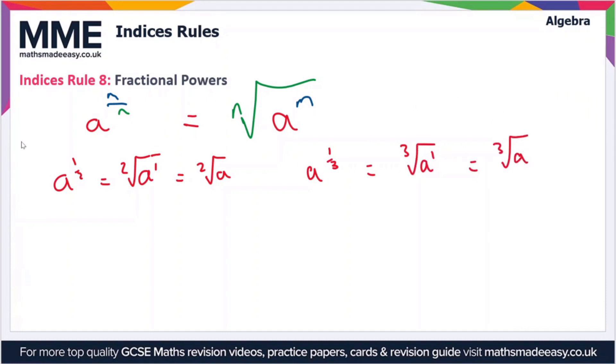But if we take this expression a to the m over n, let's just rewrite it here. A to the power m over n we can also write this in a different form. We can write this as the nth root of a and then we can write this all to the power of m.